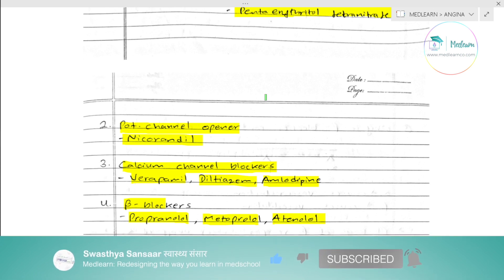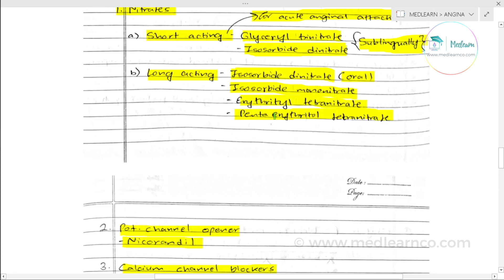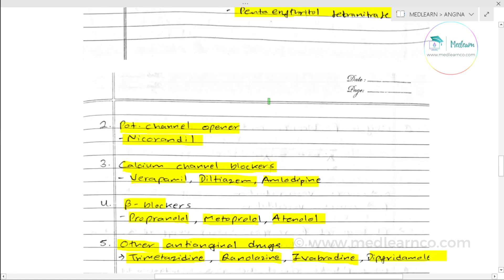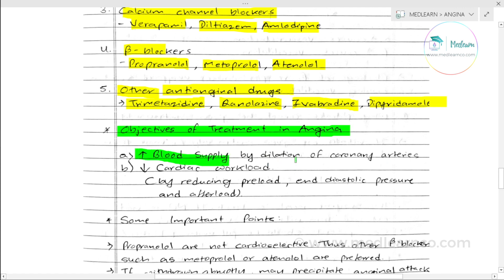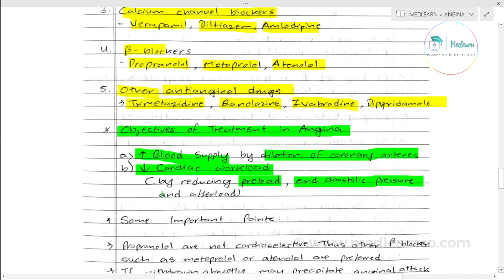An important exam question is about the treatment objectives in angina. The goals are: dilate the coronary artery to counteract vasoconstriction or obstruction of the lumen; reduce workload and oxygen demand; reduce preload by reducing end-diastolic pressure; and reduce afterload.